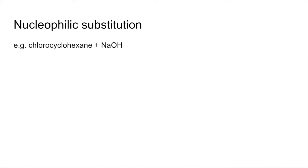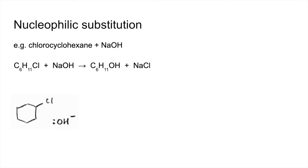We'll look more closely now at the nucleophilic substitution mechanism. The example I'm using is chlorocyclohexane with sodium hydroxide. There's the overall equation — you can see the Cl has been substituted for the OH. When we look at the mechanism we're only interested in the OH⁻ ion, the nucleophile. The first thing we do is put a dipole across the carbon-halogen bond.